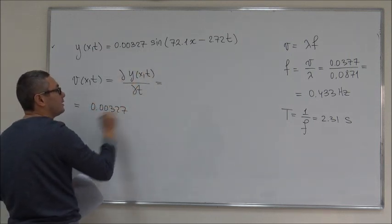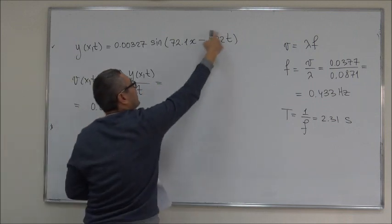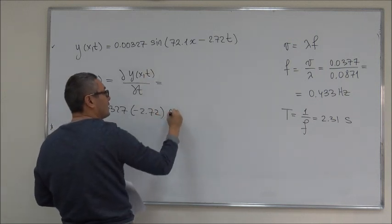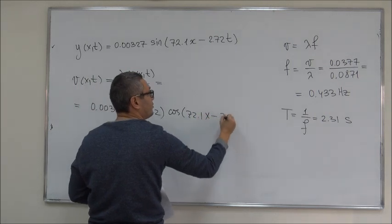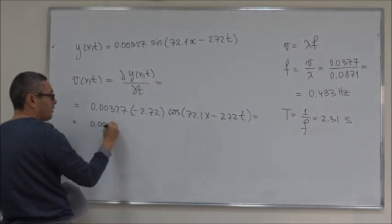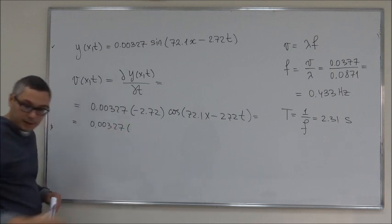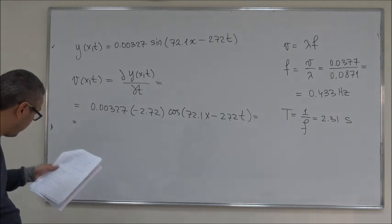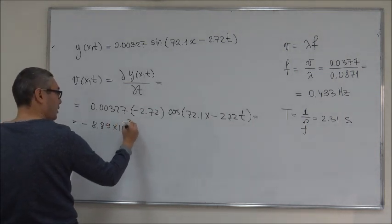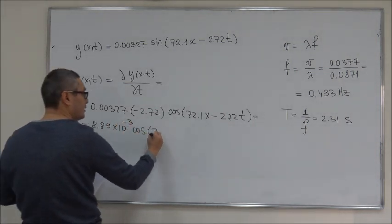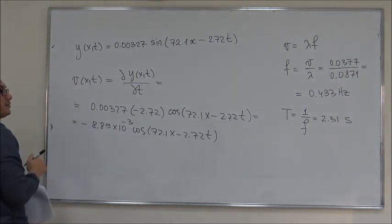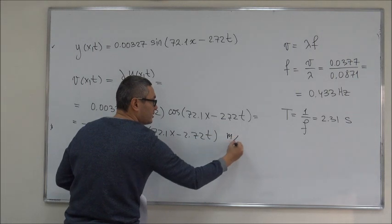I get 0.0327 times negative of this, so minus 2.72, and sine becomes cosine. So, cosine(72.1x - 2.72t). So, if you simplify this, this becomes 0.0327, well, actually we can multiply, so if you multiply that, you get minus 8.89 times 10 to the power minus 3 cosine(72.1x - 2.72t). Okay, so that is the velocity of the particle, and it's measured in meters per second.